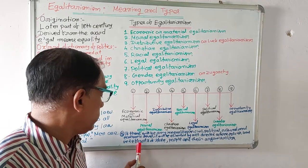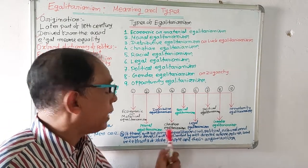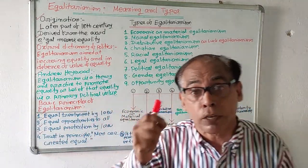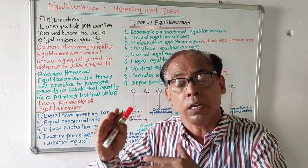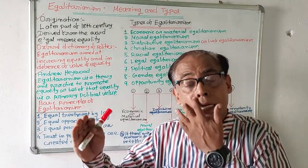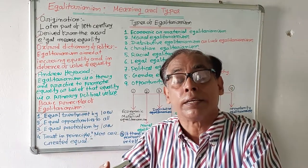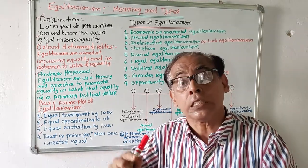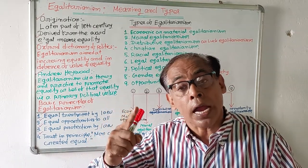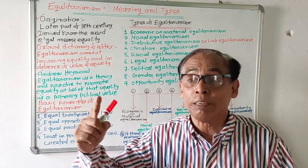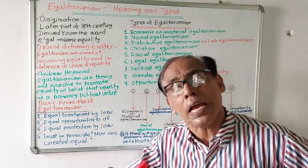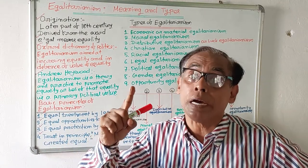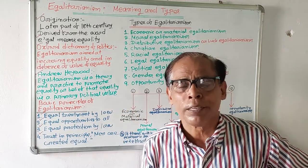The fifth important principle of egalitarianism is that if there will be any inequalities at the civil, political, cultural, or economic level, they will be eliminated by well-directed laws, policies, efforts, and actions of the state, people, and organizations.